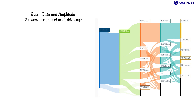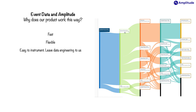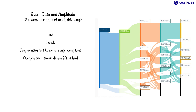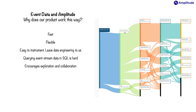Why does Amplitude work this way? Why do we use the event approach? First, it is super fast. Second, it is flexible — we're not a bank that needs 100% structure and correctness; for product work, flexibility is very important. Third, it is easy to instrument, involving just small snippets of code — you basically leave all the messy details of data engineering, identity resolution, and optimization to us. Fourth, querying event stream data in SQL is hard; if you translated some of the insights in Amplitude to SQL, they would run hundreds of lines of SQL. Fifth, this way of working encourages exploration and collaboration — instead of needing to know every question in advance, you can track what matters, explore the data, refine your questions, and get new insights.